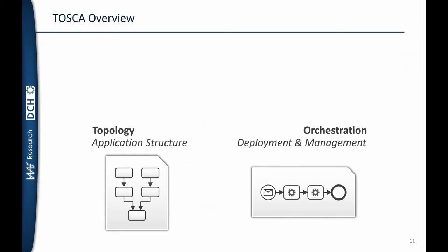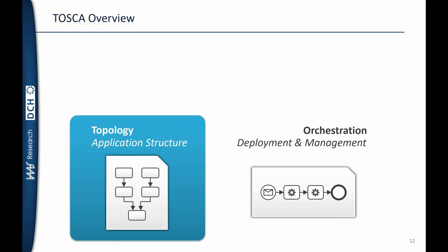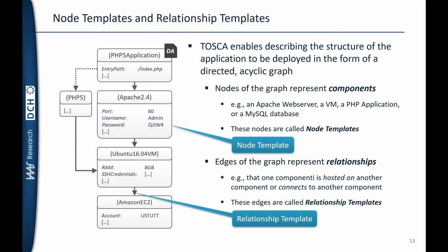For now, we are going to focus on the topology, which describes the application structure. To do that, TOSCA defines node templates and relationship templates. Node templates are basically nodes, and relationship templates are relations between these nodes. For example, we have a PHP application that is hosted on an Apache 2.4 web server, which itself is hosted on the Ubuntu VM provided by Amazon EC2. These nodes are called node templates in TOSCA, and the relationships between them are called relationship templates.